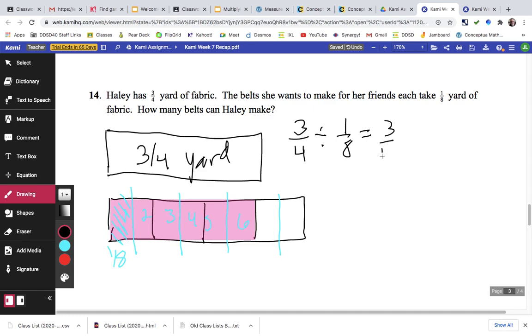We can double check it by doing 3/4 of a yard divided by the 1/8 size pieces. So that's 3/4 times 8 over 1, and that's 24 divided by 4, and that's equal to 6.